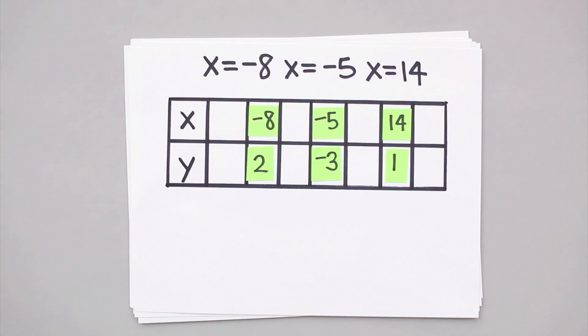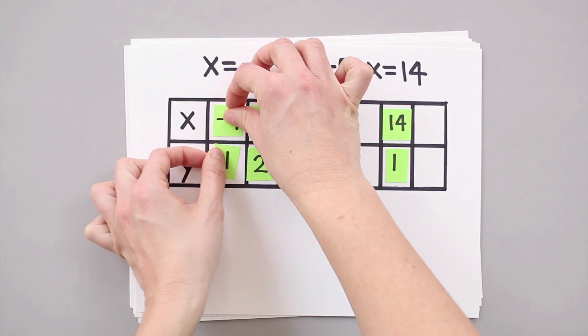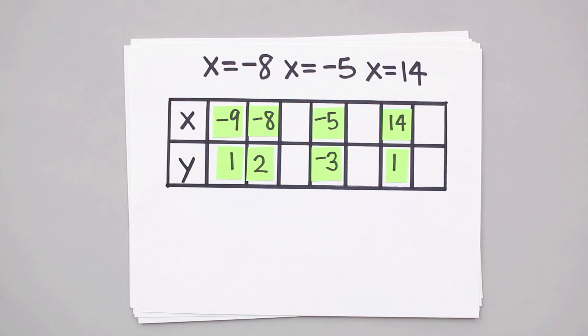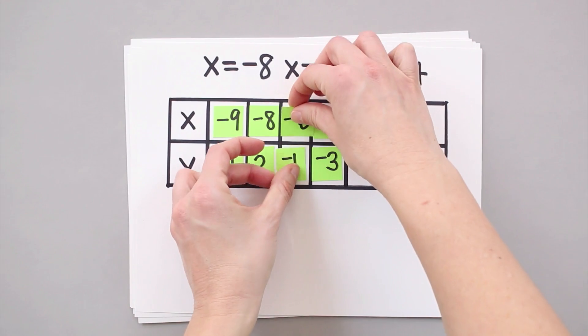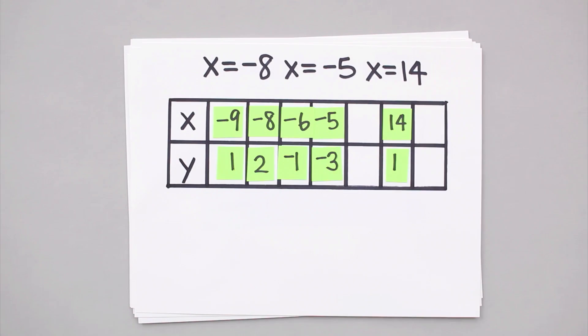One easy way to keep track of all this information is to create a chart like this one. Notice that in addition to the x and y values that we found for our critical points, we also need to look at the behavior of the function for values on either side of each of the critical points.